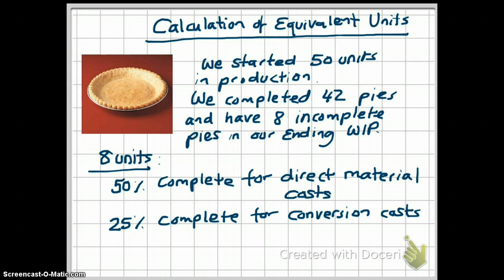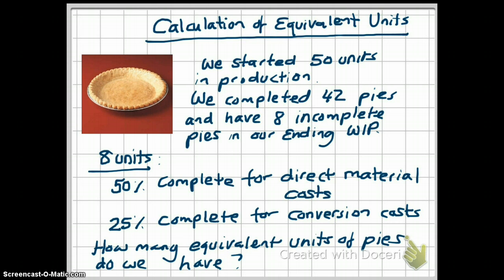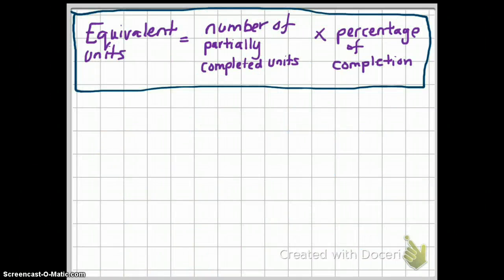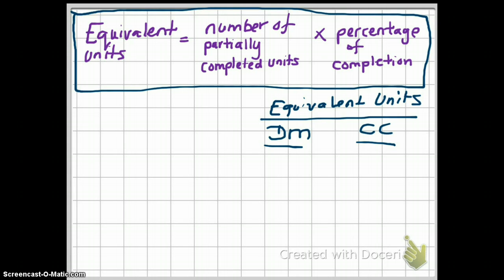Now, how do we calculate our equivalent units? Whenever we do process costing problems, we always split our costs into direct material costs and conversion costs. So we will have to calculate two equivalent units: one for our direct material costs and one for conversion costs. The formula for equivalent units is the number of partially completed units — that is, the units in your ending work in process — multiplied by the percentage of completion.